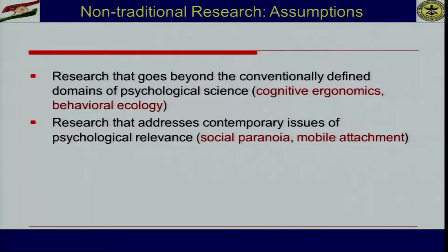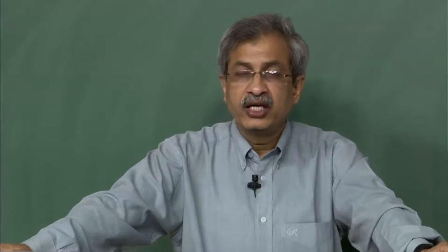We can also conduct research that addresses contemporary issues of psychological relevance. Contemporary issues are not always chartered in textbooks. We can understand the relationship between contemporary issues and behavioral manifestation — for example, mobile attachment, how mobile is becoming addictive to all our social interactions, how social paranoia is growing, how we become suspicious of each other, and how it becomes contagious following certain incidents. These issues need to be tested.